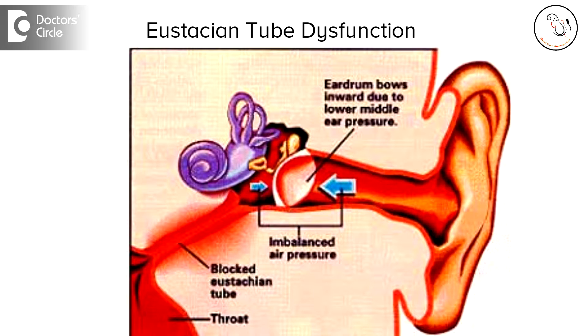Eustachian tube dysfunction can occur for various reasons. The common ones are recurrent cold and sinusitis, a tumor pressing on the Eustachian tube, or in some people we just cannot determine why it happens — the Eustachian tube just one fine day decides it will not function anymore.